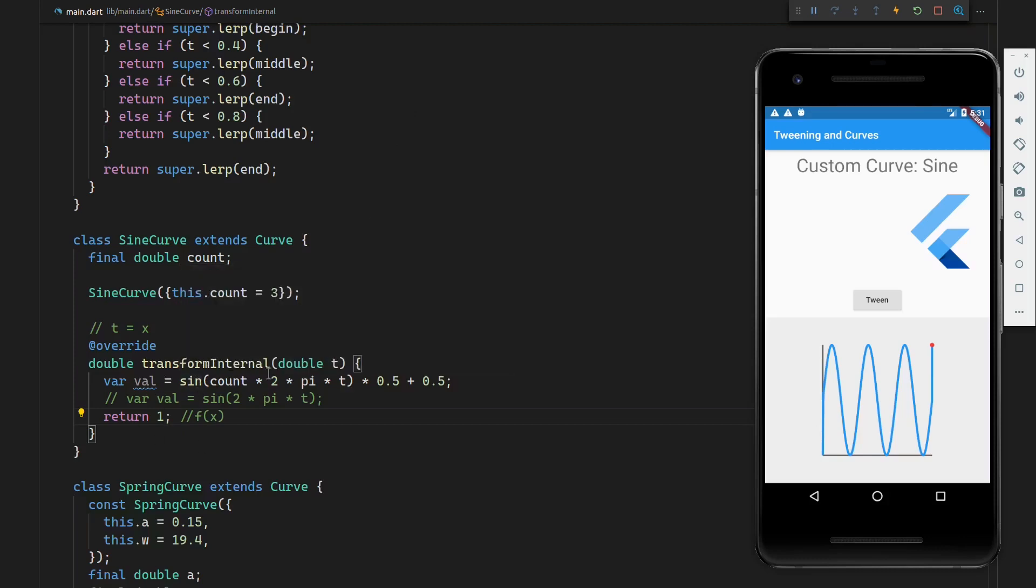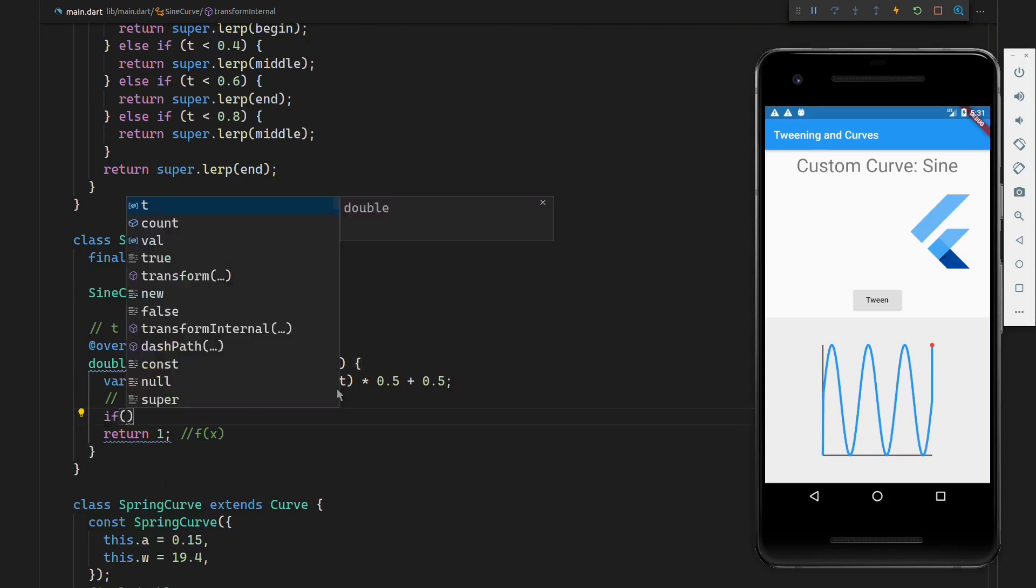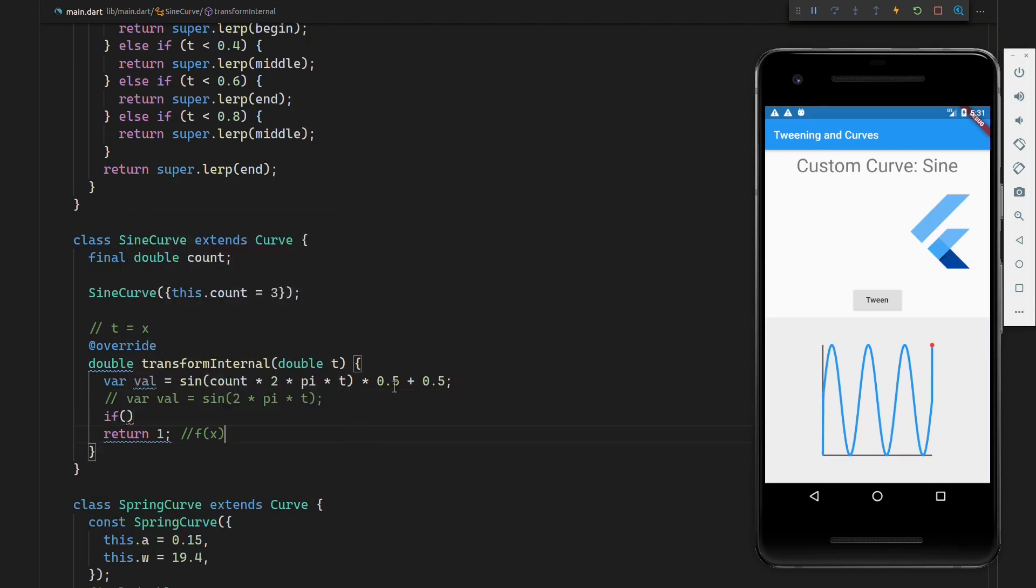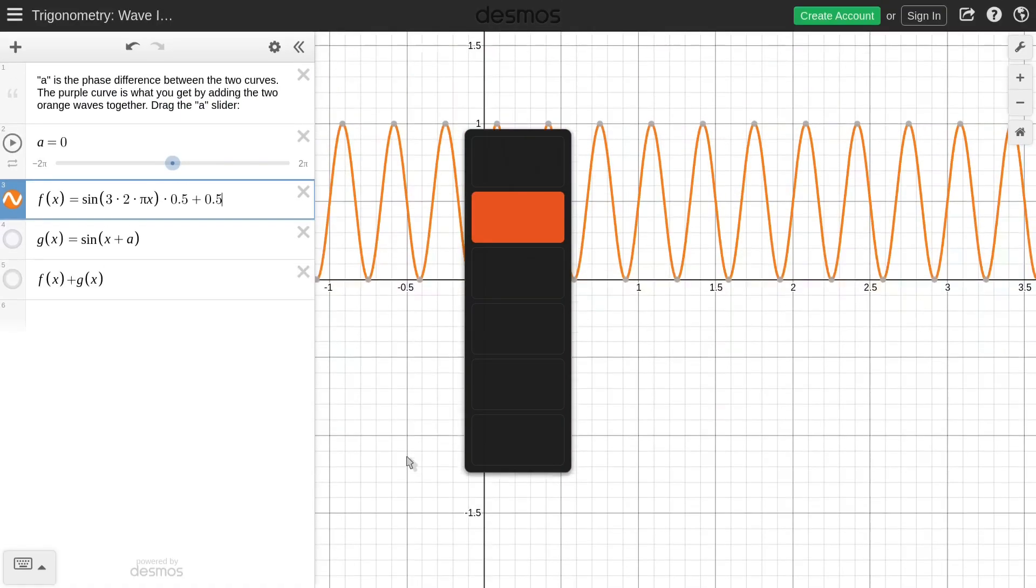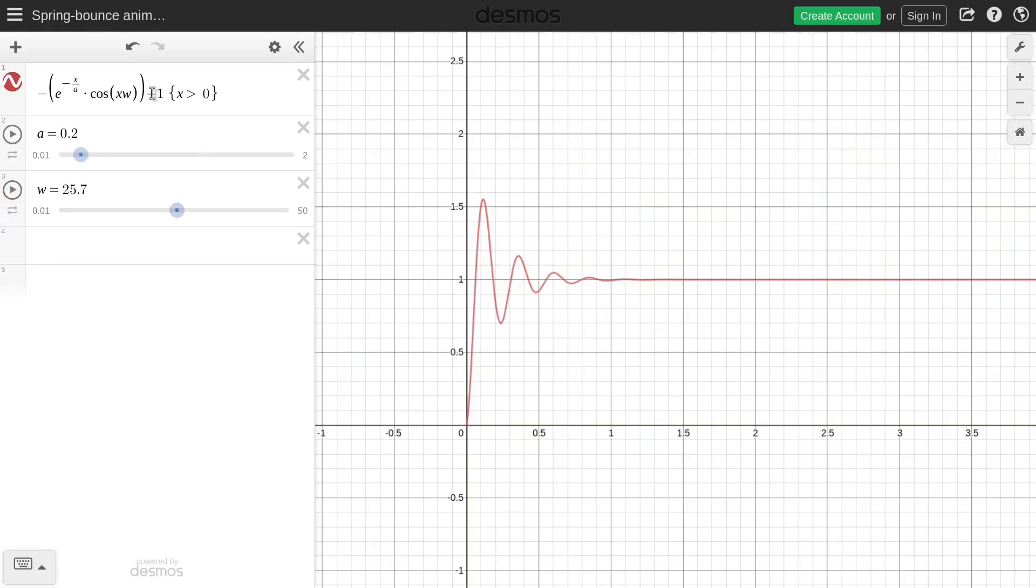If we wanted to, we could also do weird if conditionals. So for example, if it's bigger than 0.5, return this curve. If it's smaller than this value, do this. So there is no limit to the curve that we can make. And to further illustrate that, I've also made this spring curve. And what the spring curve does, it is a springy curve. So as you can see, it has this little bit of a spring effect. And if we take a look at this function, you will note that it is the exact same function that we have over here.